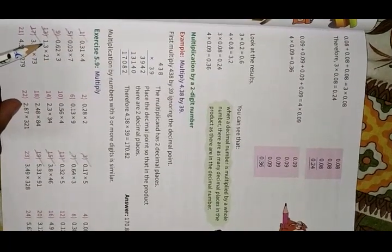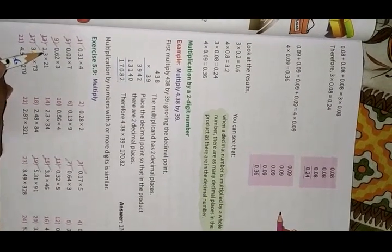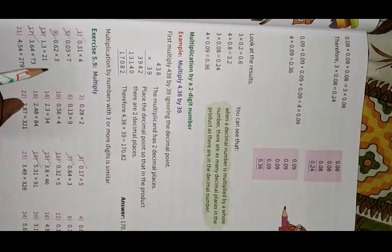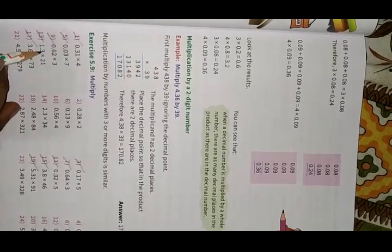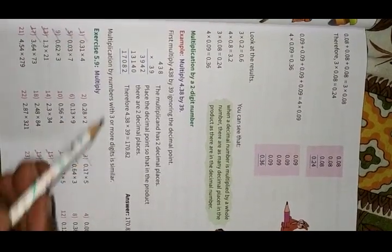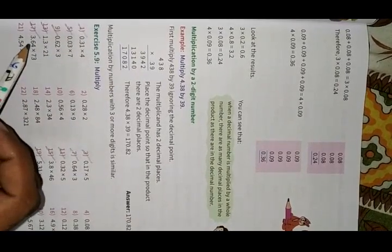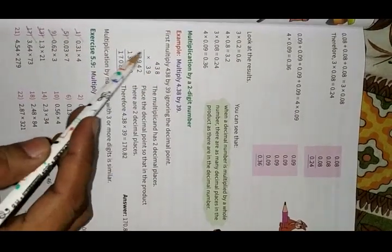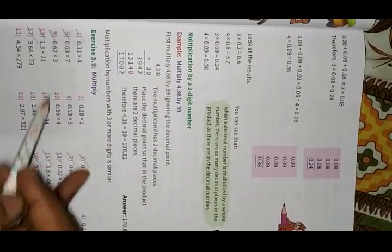When the number is 1.3 into 21, there is only one digit after the decimal. After multiplying, just count one digit from the right and put the decimal just before that one digit. You have to do only 10 questions of this exercise: 1, 3, 5, 7, 9, 11, 13, 15, 17, and 19 in your notebook. You have to show the multiplication in every question.